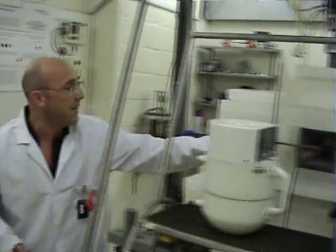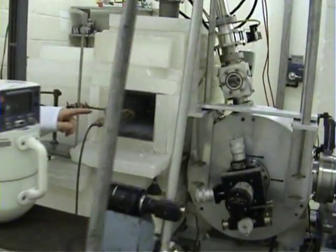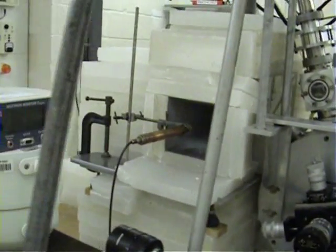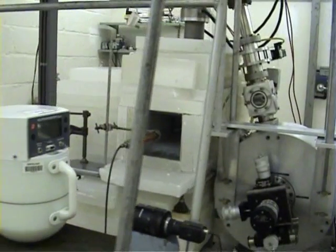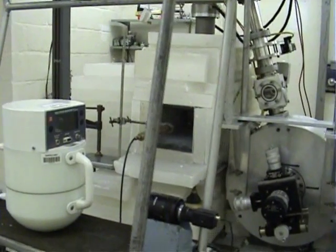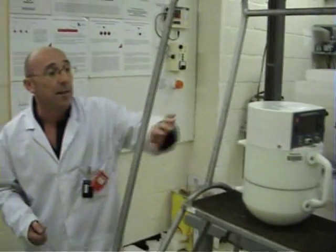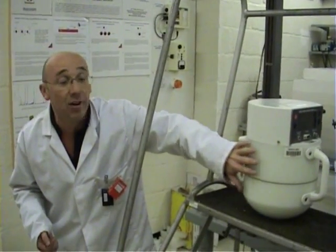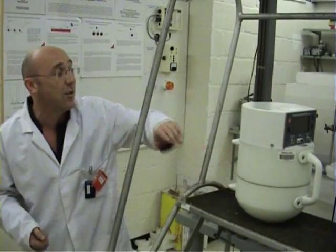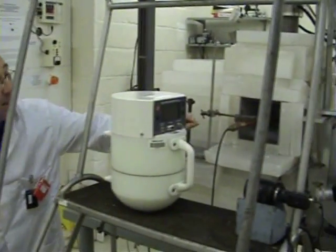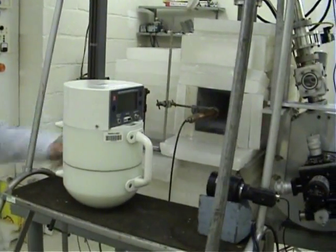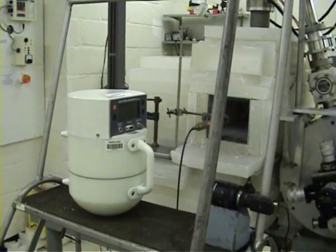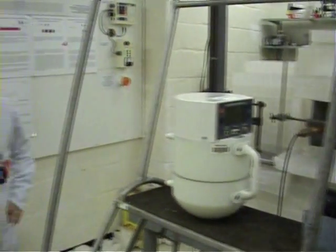So what Christos has set up is a boron trifluoride tube which is connected to electronics outside, and what we're trying to do at the moment is corroborate that with our existing neutron detector. This one has already got a moderator on it, so it's not so sensitive to the slow neutrons, whereas this one is sensitive to the slow neutrons but not to the fast neutrons. We're having a little bit of a struggle because our readings aren't as linear as we thought they should be, and we're trying to find the cause of that.